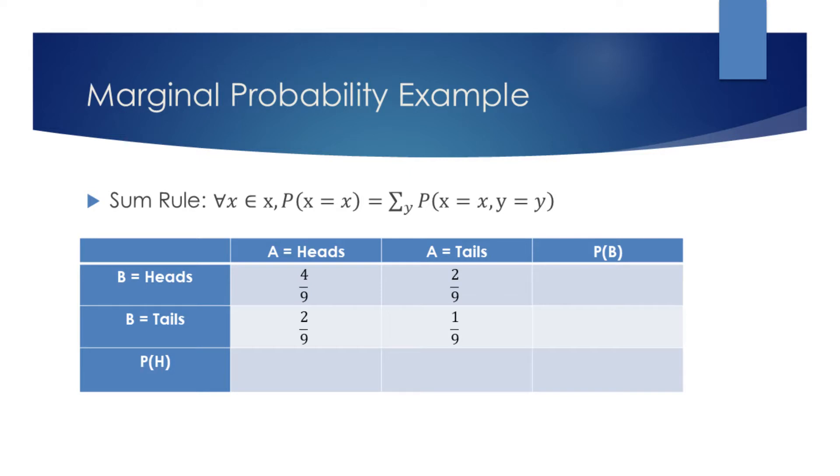This is done using the sum rule, which essentially tells us to add up the probability of every event in which the outcome is what we're interested in.